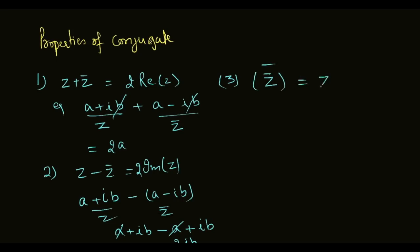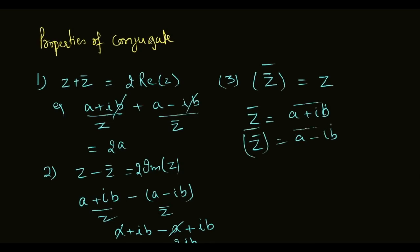The third property is: if we take the conjugate of a conjugate, we get back z. For example, z was a plus iota b, its conjugate is a minus iota b, and if we take the conjugate of that again we get a plus iota b, which is equal to the original complex number z. So conjugate of conjugate of z equals z.